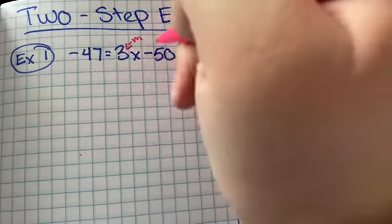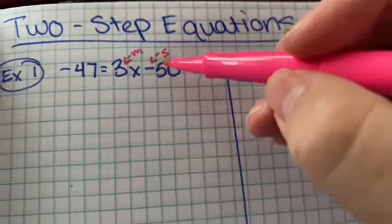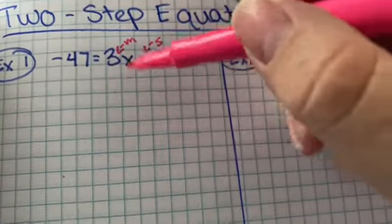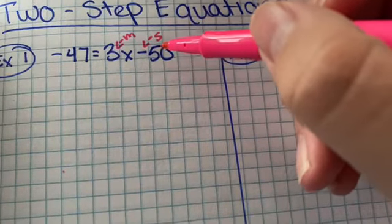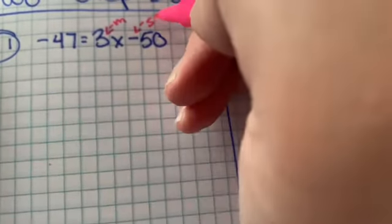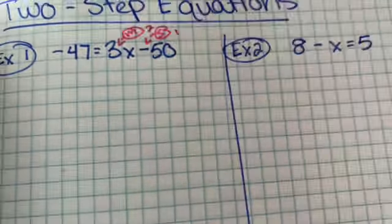...multiplication here and subtraction here. You don't obviously have to write this stuff, but I'm just writing this to show you what I'm doing. Remember, we use inverse operations, so we have to get rid of subtraction or addition first. So this is one, this is two.